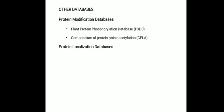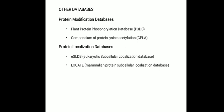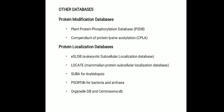These databases are available for various species, such as ESLDB or Eukaryotic Subcellular Localization Database for general eukaryotes. Locate contains mammalian protein subcellular localization information. SUBA is a database for Arabidopsis. P-SORT is for bacteria and archaea. Some databases focus on special organelles such as the Organelle Database or Centrosome Database.